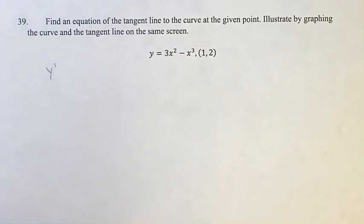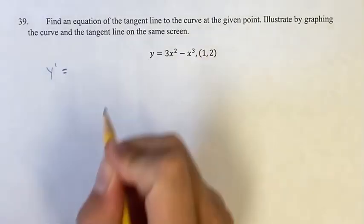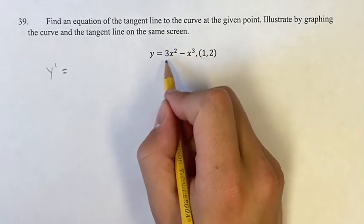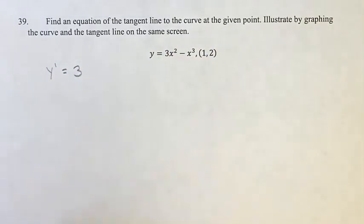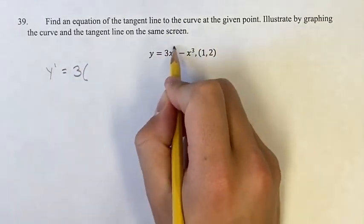So doing that, we have y prime, our derivative, that's going to be equal to—for this term, we have a power function, so you take the coefficient, write it out first, and multiply that by your exponent.